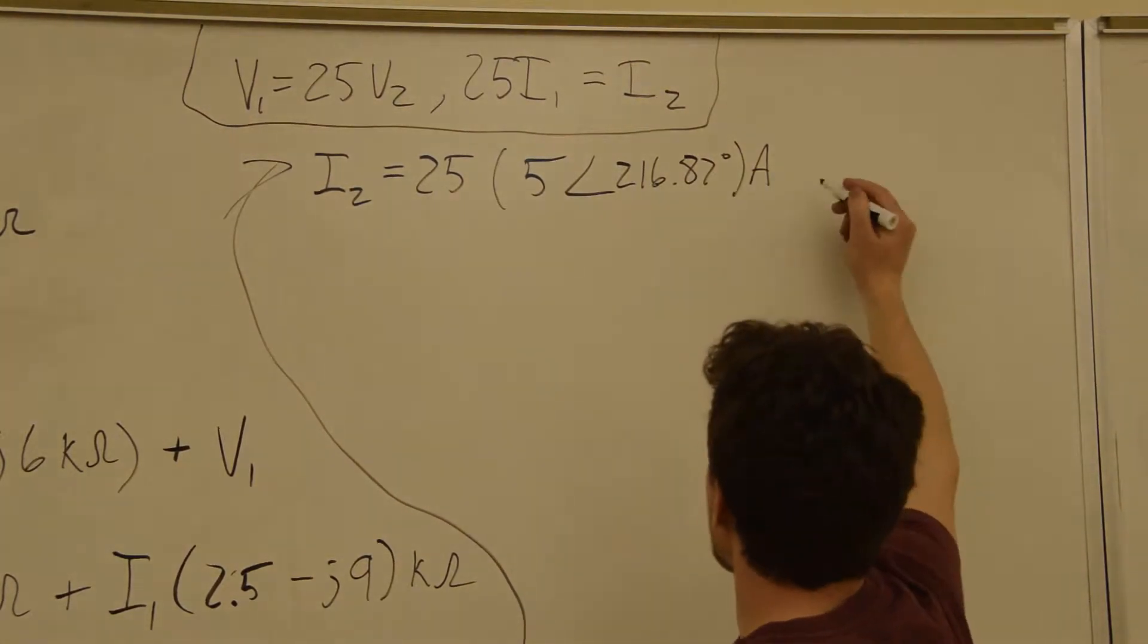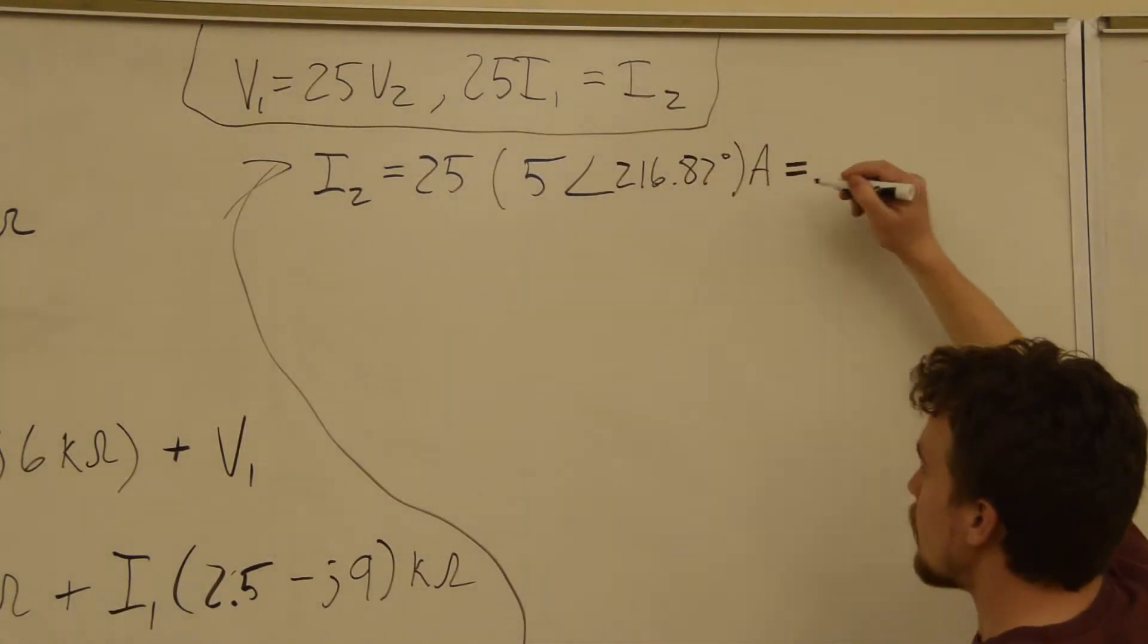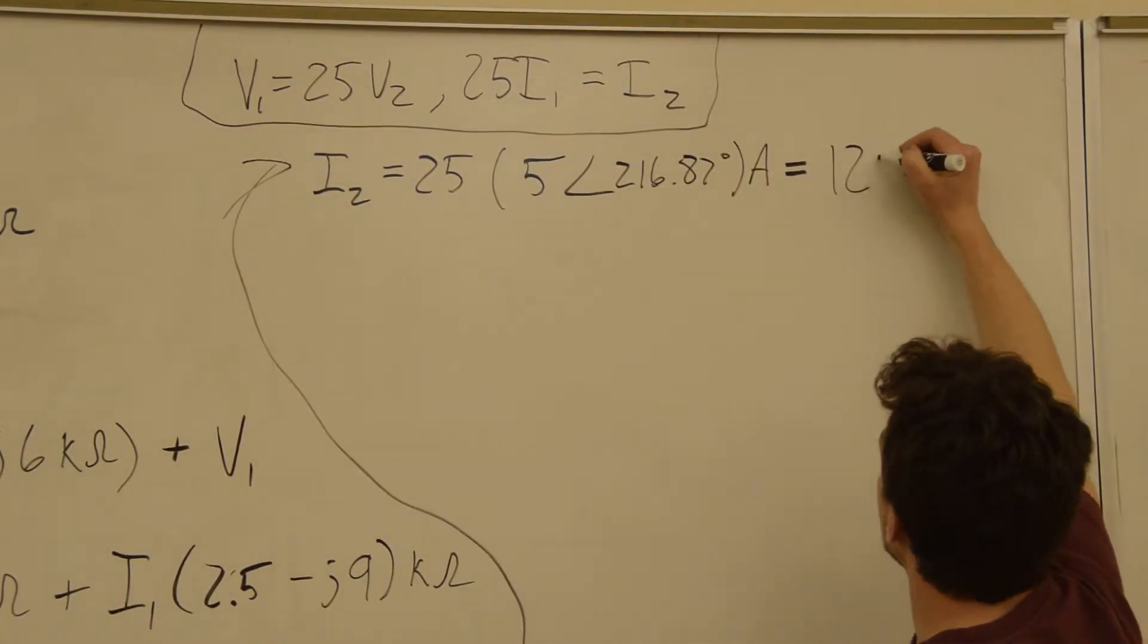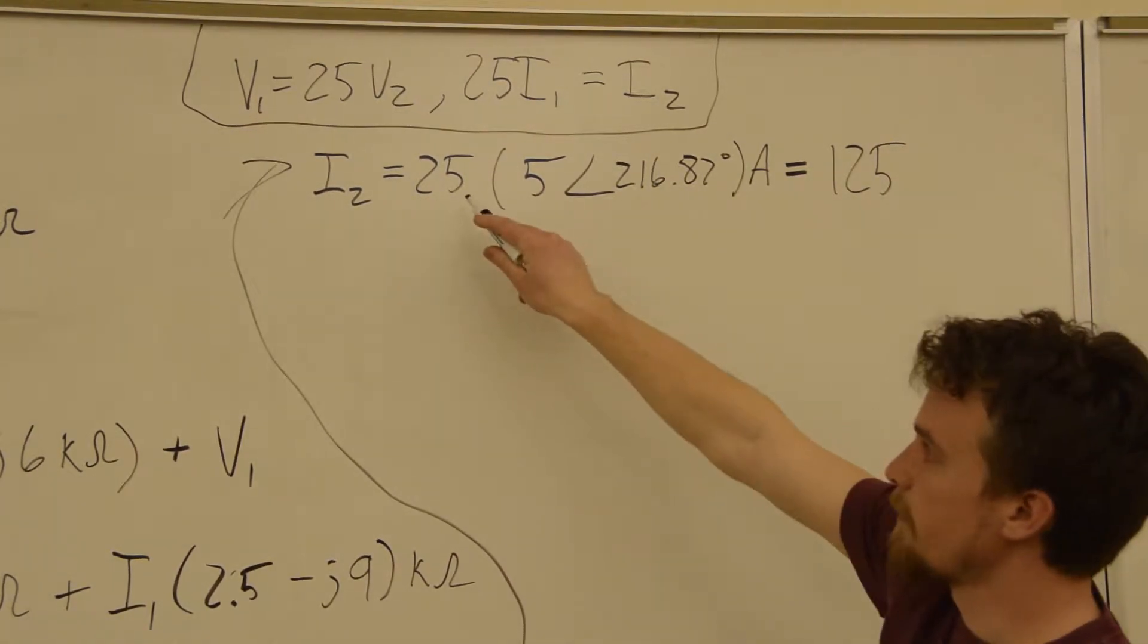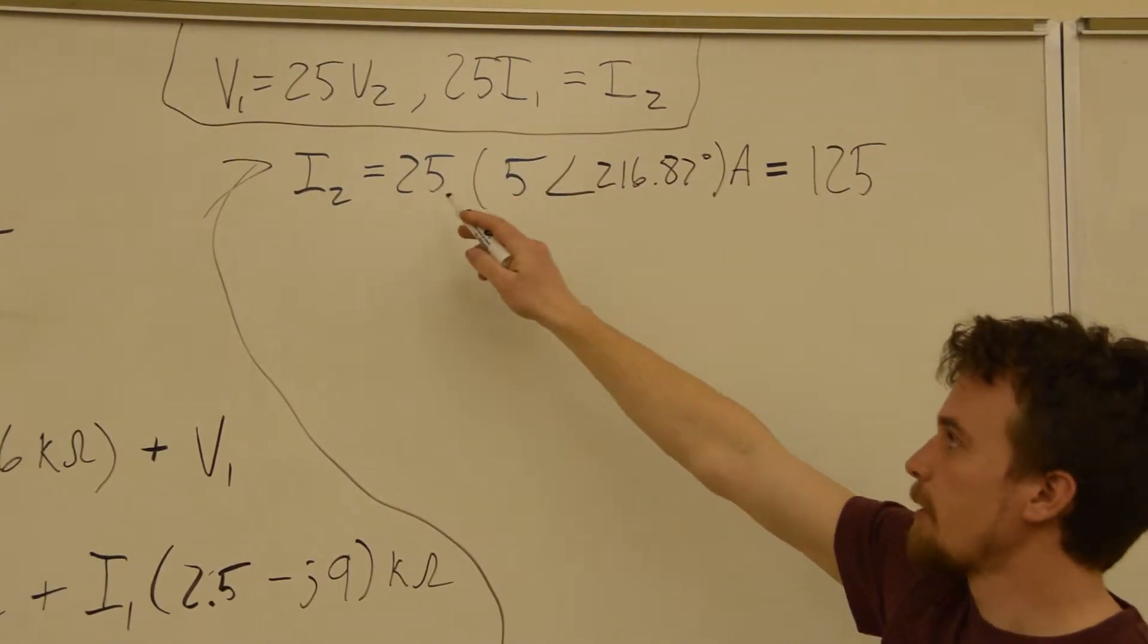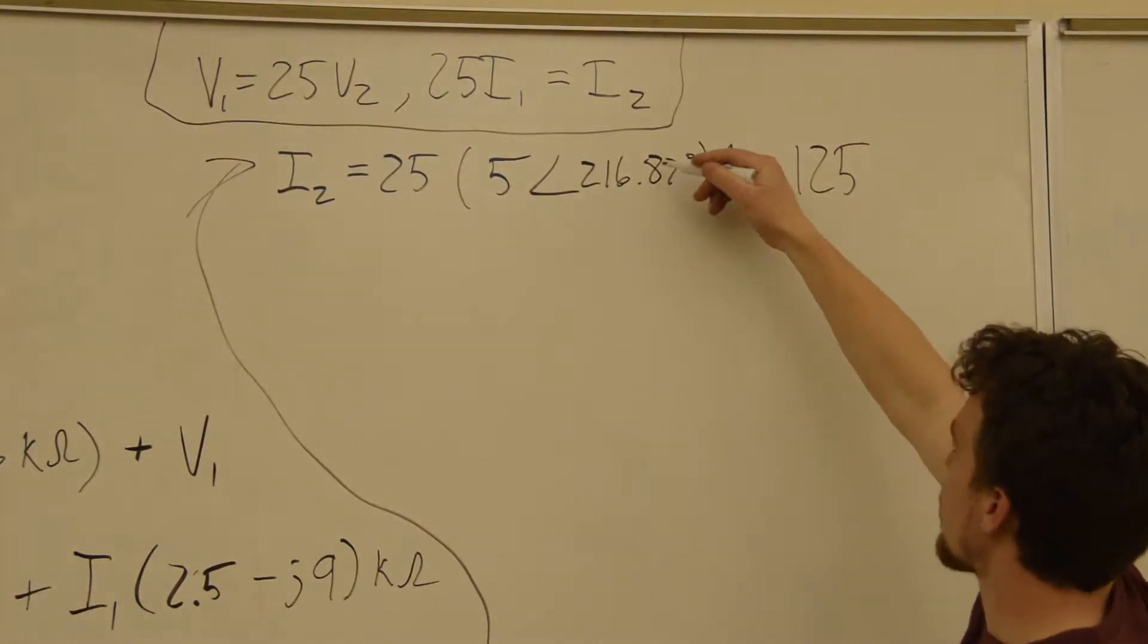So, I2 is equal to 25 times that. That's just equal to 125. And since this has a phase, that would have a phase shift of 0. So, nothing happens to the phase.